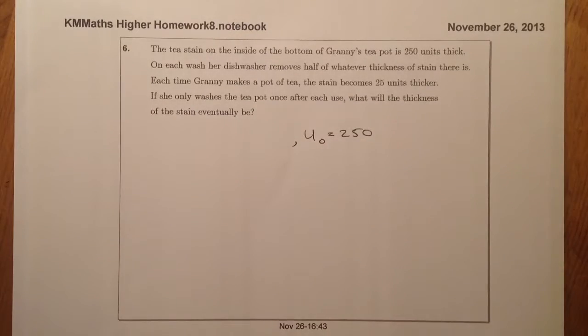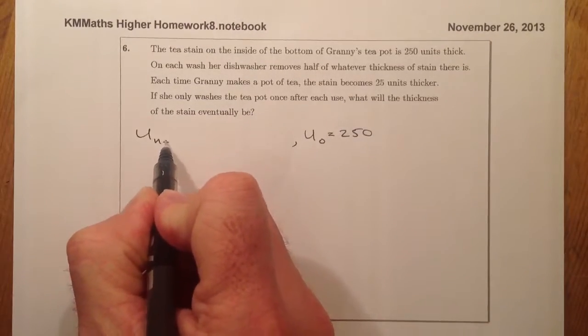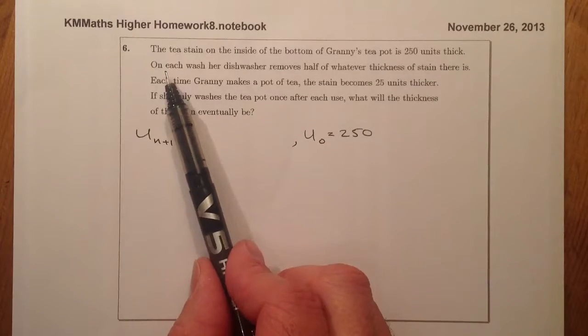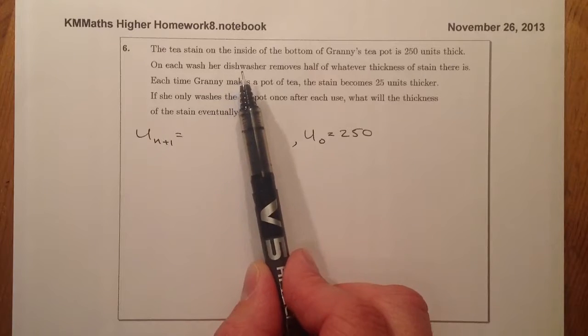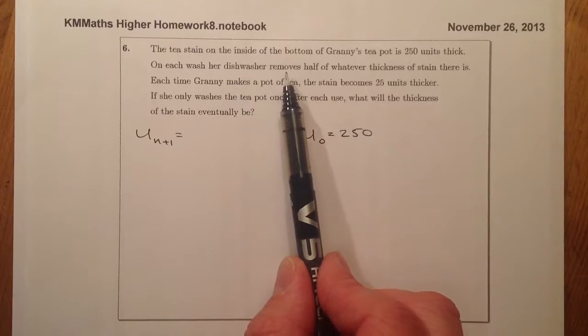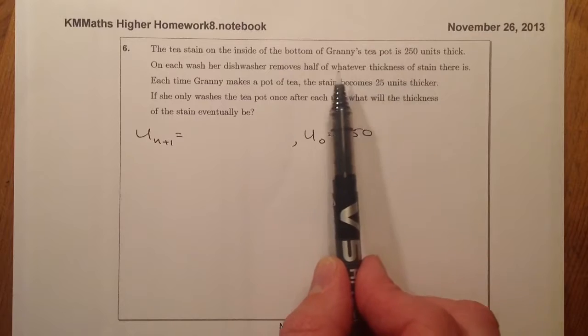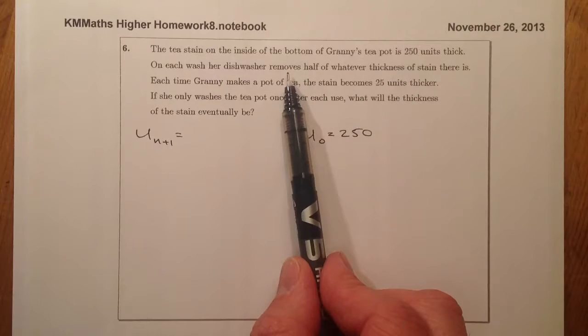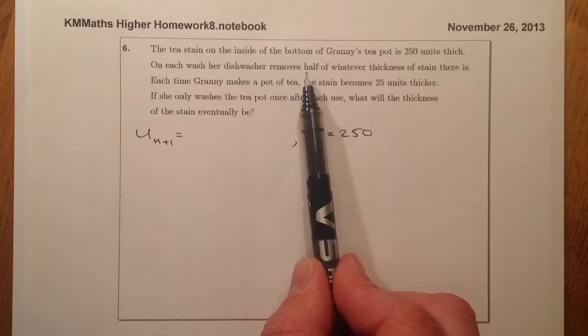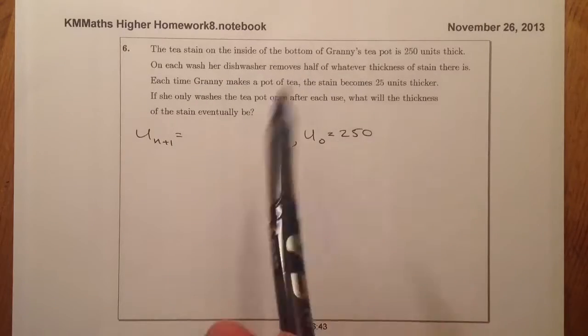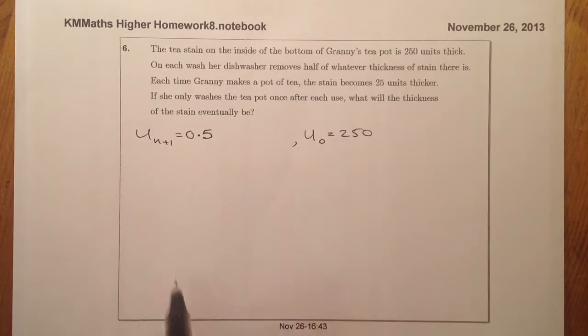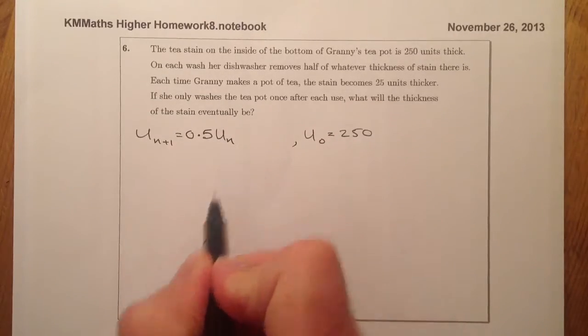What I'm then going to do is look at a recurrence relation, which will be Un+1 is going to be equal to... And I can see here that on each wash using the dishwasher, it removes half of whatever thickness of stain there is. Well, really, it's not what it removes, but what it leaves behind that I'm interested in. And if half is removed, half's left. OK, so from here, I'm going to have 0.5 just written as a decimal. That's then going to be multiplied by Un.